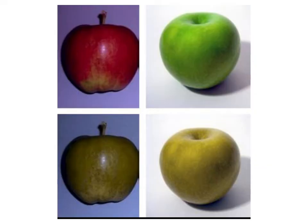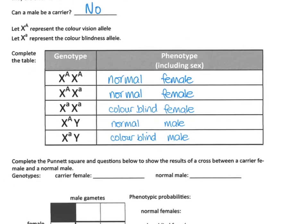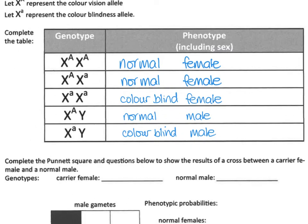On the left we have a photograph of a red apple and a green apple. On the right, this is how those apples would appear to someone with red-green colour blindness — a couple of my uncles cannot tell the difference between a red and green apple. Going through the table: the top genotype is a normal female, the second also normal female, the third has two colour blindness alleles so she's a colour blind female, the next is a normal male, and the last is a colour blind male.